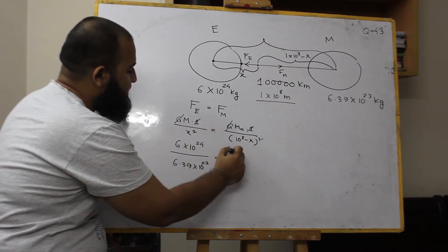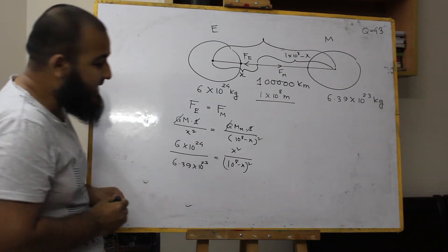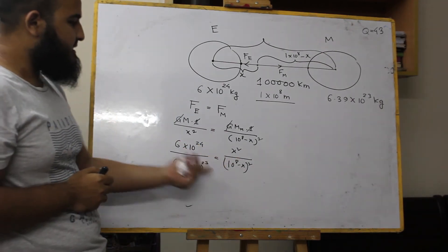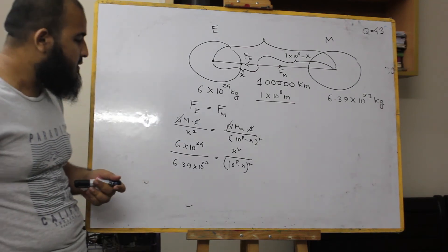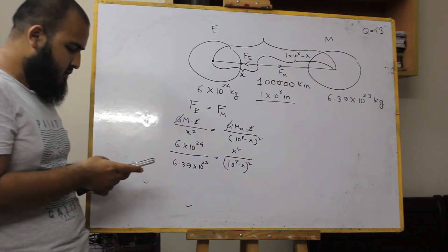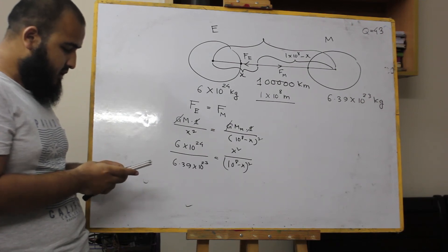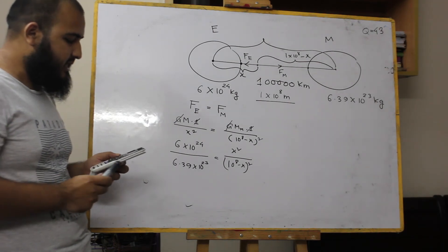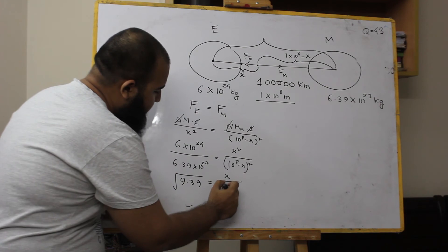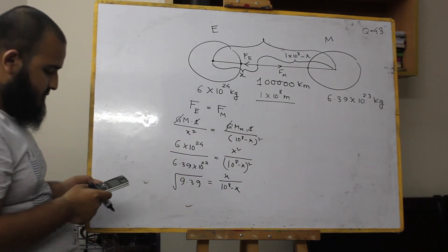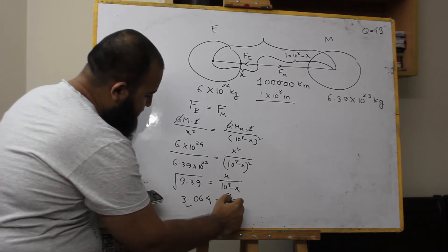I can use x to the point x squared, 10 to the power h minus x. I can use x squared — quadratic equations. So x squared, 10 to the power 24, 6.39 into 10 to the power 23. Our equation: 9.39. The root over is equal to x over 10 to the power 8 minus x. 3.064 is equal to x over 10 to the power 8 minus x.